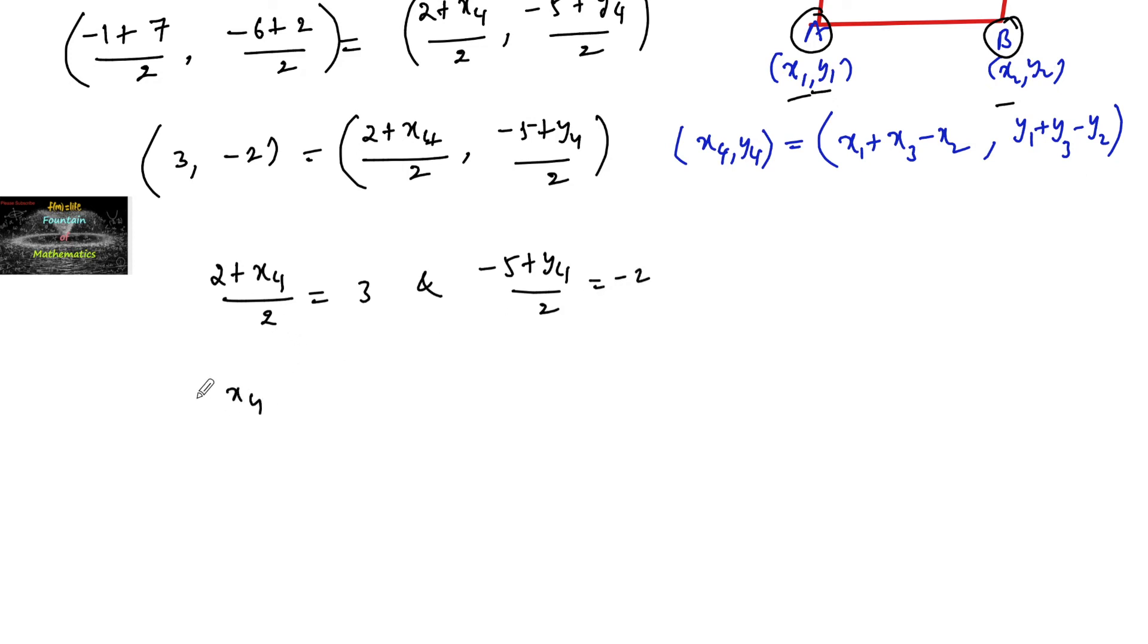So 2+x₄ = 6, which gives x₄ = 4. And -5+y₄ = -4, which gives y₄ = 1.